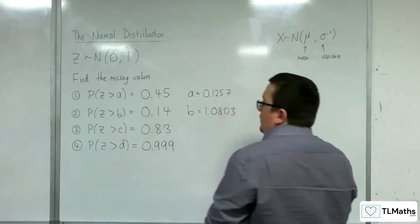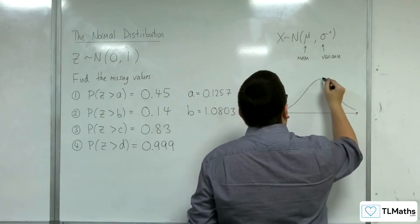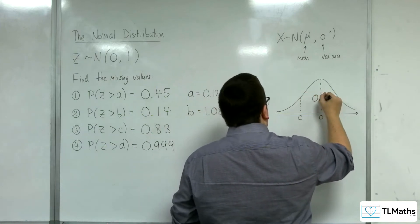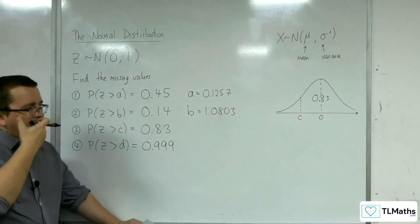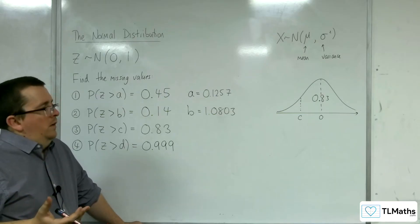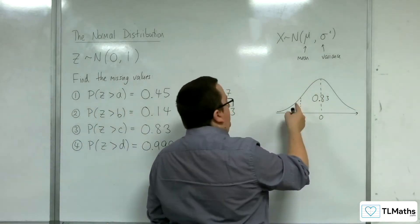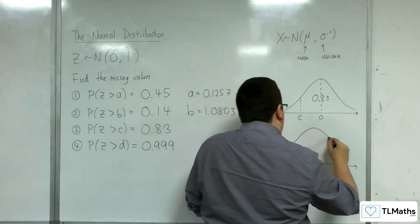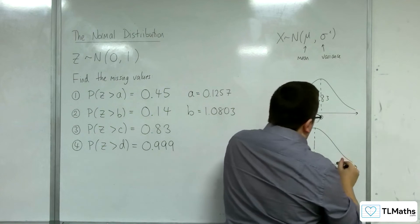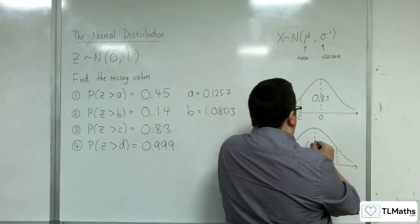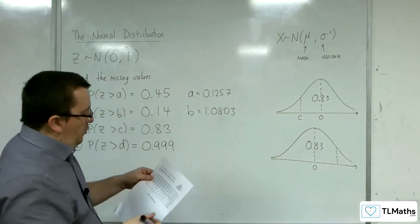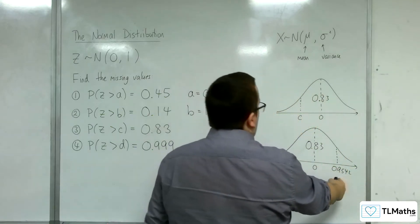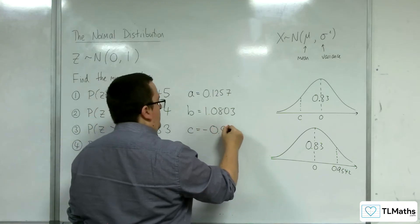Number 3: the probability of z being greater than c is 0.83. There's 0. The probability to the right is 0.83, so c would have to be here in order for that to be 0.83. I can't look that up directly — there's no use looking up 0.17 because the tables only go down to 0.5. So think about the mirror image. The value in the mirror image gives an area of 0.83. Looking up 0.83 gives 0.9542, so c must be the mirror image: negative 0.9542.